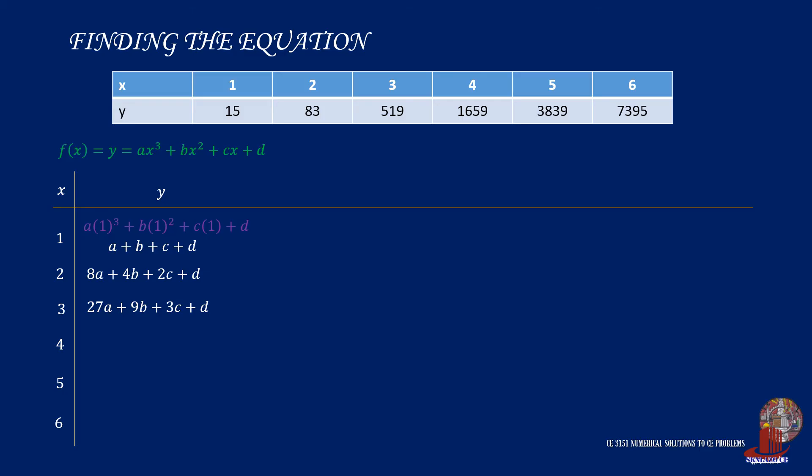For X equal to 2, the function will be 8A plus 4B plus 2C plus D. Now plug X as 3, and get 27A plus 9B plus 3C plus D. Do the same procedure with X is equal to 4, then X is equal to 5, and X is equal to 6. Then your Y column is complete.